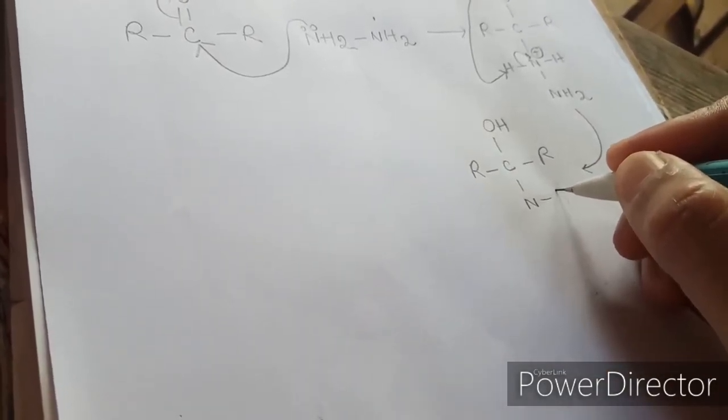Then the next intermediate product will be R-C(OH)-R with NH-NH₂. After this, this lone pair will be donated here, there will be a double bond formed, and OH will be released.